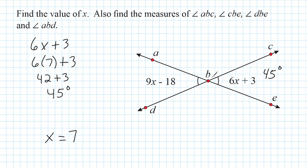Because angle CBE is 45 degrees, that means angle ABD is also 45 degrees. Now with any intersecting lines, the angle right next door is going to be a supplement to that angle. Angles ABC and CBE together form a straight angle, or half of a circle, so if we add the measure of angle ABC to angle CBE, we have a sum of 180 degrees.